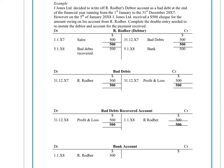The original double entry would have been to credit the sales and debit Rodber's debtor account in the sales ledger by $500. Then at the end of X7 we wrote him off as a bad debt, so we would have credited the debtor account — Rodber's account — and debited the bad debts account. At the end of the year that would have been transferred to the debit side of the profit and loss account in the income statement as an expense.